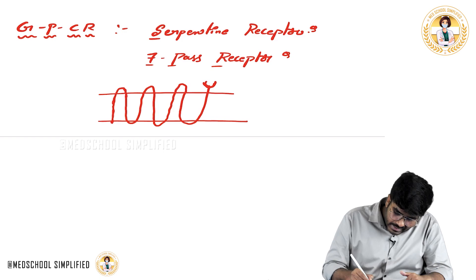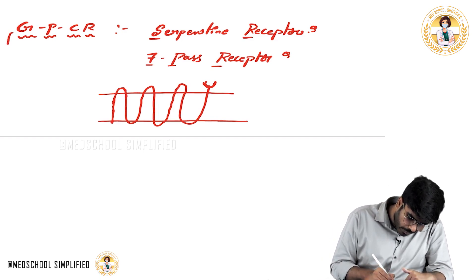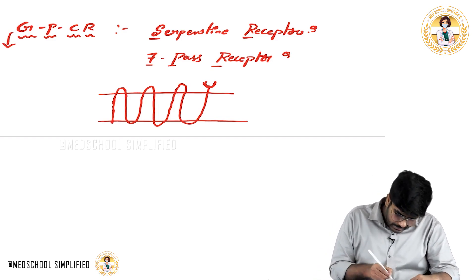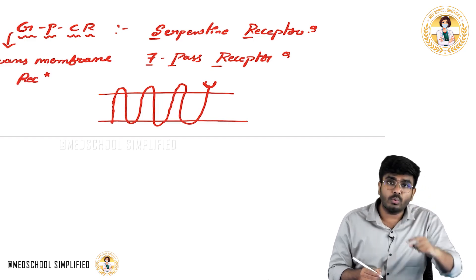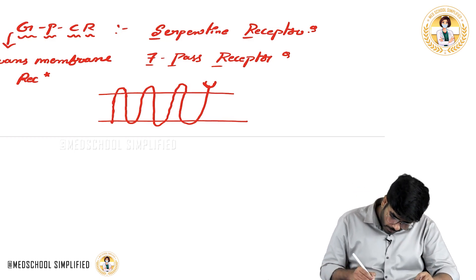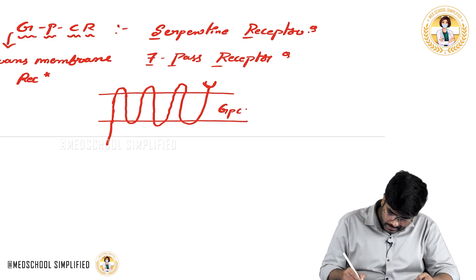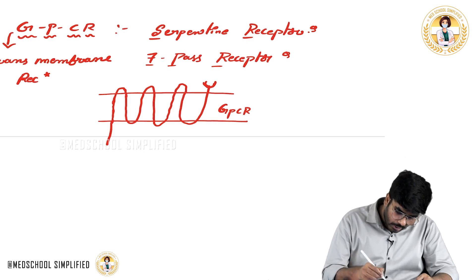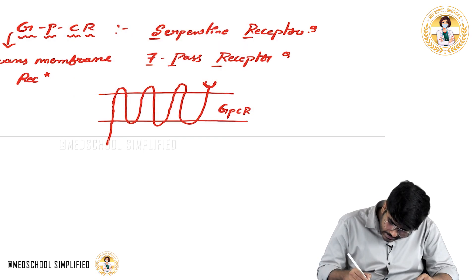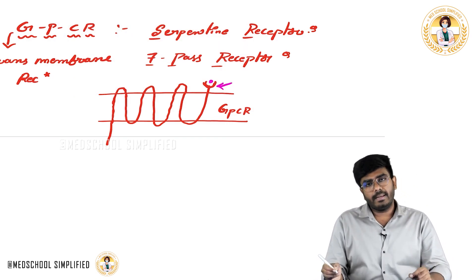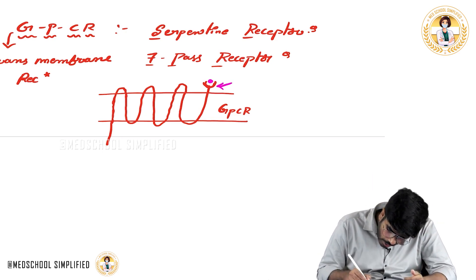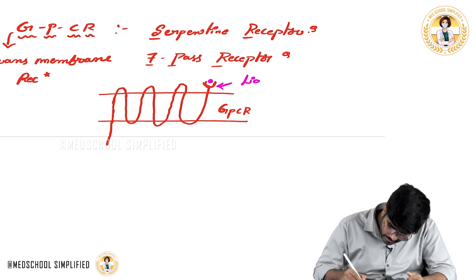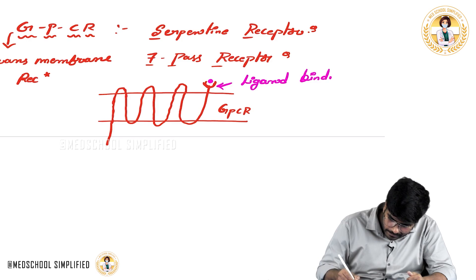As it looks just like a snake, it is called a serpentine receptor. This GPCR is also an example of a transmembrane receptor because it is passing through the membrane from outside to inside. There are two domains to know: the first domain is the site where the ligand will come and bind — that is the ligand binding domain or hormone binding domain.